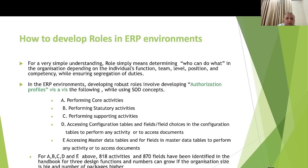Category A: performing core design activities. Category B: performing strategy activities such as regulatory approvals or strategy approvals. Category C: performing supporting activities. Category D: accessing design configuration tables and construction tables with their field choices. Category E: accessing master data tables and fields. In the presenter's book, 818 activities and 870 fields are identified at a granular level pertaining purely to design functions — not accounts, projects, marketing, or materials.